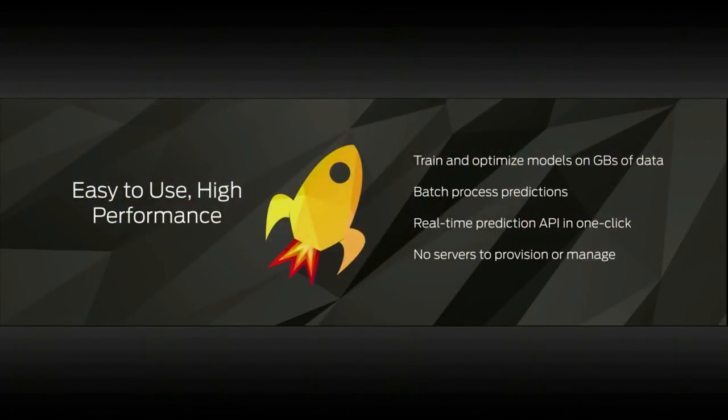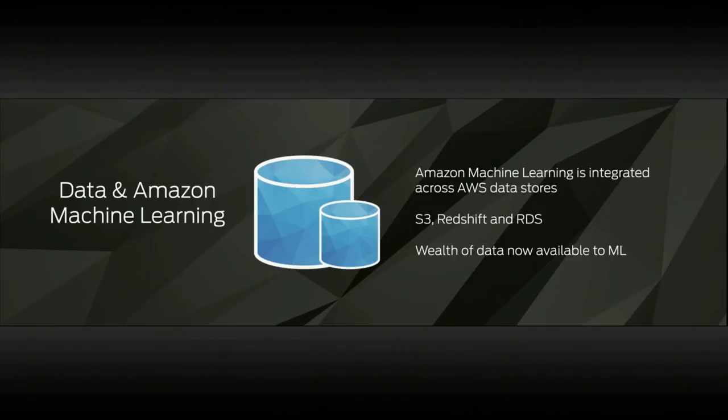Amazon Machine Learning is very easy to use but also high performance. You can train and optimize predictive models using hundreds of gigabytes of data, then batch process billions of predictions, or put them into a real-time prediction API with a single click. Throughout the whole process, there are no servers to provision and no ongoing server management — it's a fully managed end-to-end service, integrated and ready to work with data already stored in S3, Amazon Redshift, and Amazon RDS.